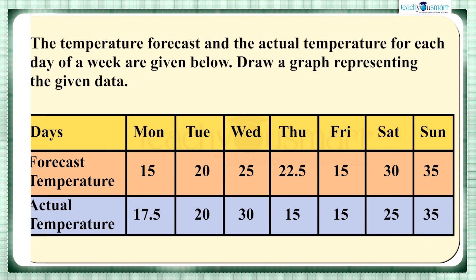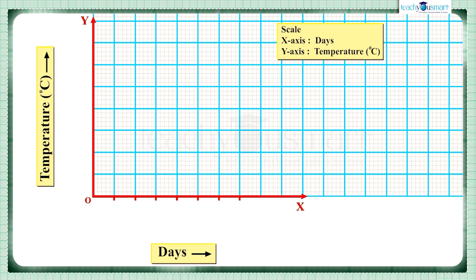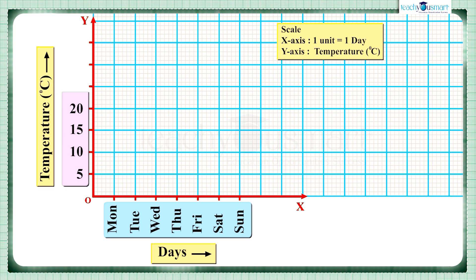When we have to represent this data graphically, we take the days along the x-axis and the temperature along the y-axis. The scale is taken as one unit on the x-axis represents one day, and one unit on the y-axis represents five degrees Celsius.